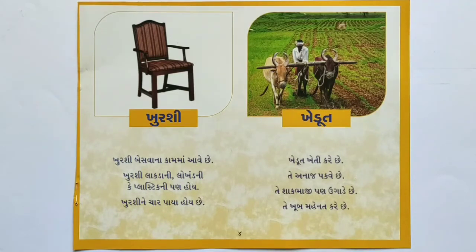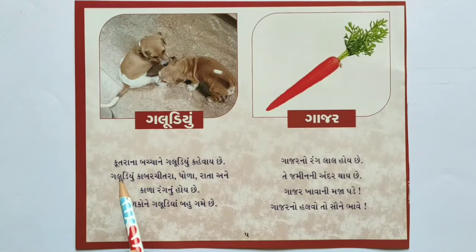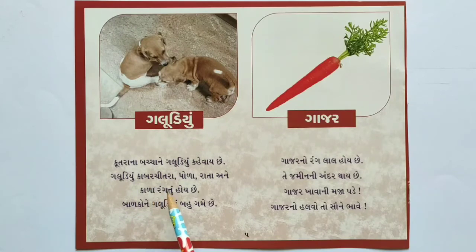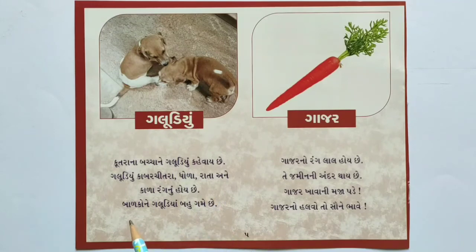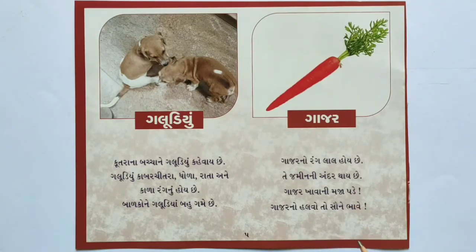ગલુડ્યું - કૂતરાના બચ્ચાને ગલુડ્યું કહે છે. કાબરચિત્રો ઘોડો - રાતો અને કાળા રંગનો હોય છે. બાળકોને ગલુડ્યા બહુ ગમે છે. ગાજર - ગાજરનો રંગ લાલ હોય છે. તે જમીનની અંદર થાય છે. ગાજર ખાવાની મજા પડે, ગાજરનો હલવો તો સૌને ભાવે.